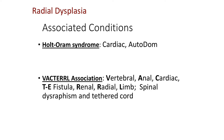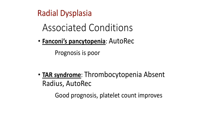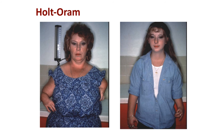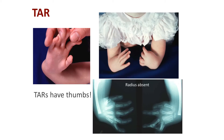Associated conditions include Holt-Oram syndrome, which can have cardiac ramifications and is autosomal dominant. There's VACTERL, Fanconi pancytopenia, and TAR syndrome. Here's a mother and daughter with Holt-Oram — you can see the mother is more affected, showing variable penetrance. TARs have thumbs — that's very important. If you see thumbs on a radial dysplasia where there's no radius but the patient has a thumb, they have TAR. Patients with TAR will have normalization or at least improvement of their thrombocytopenia over time.